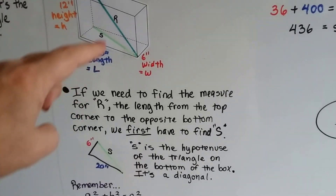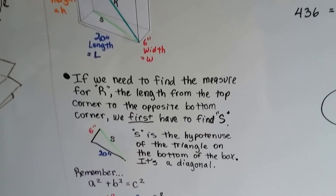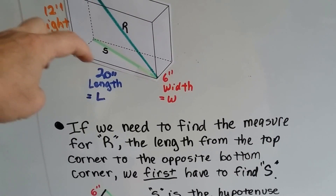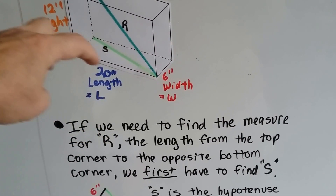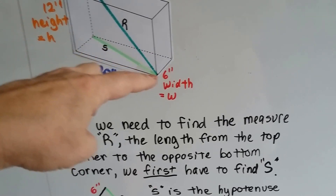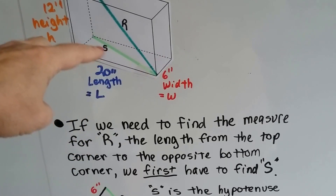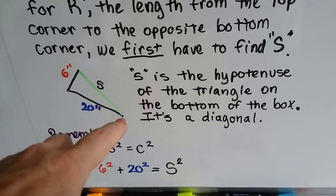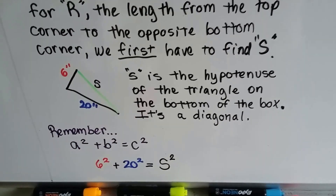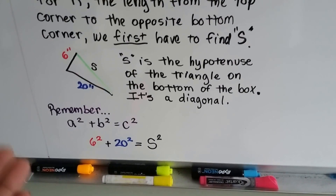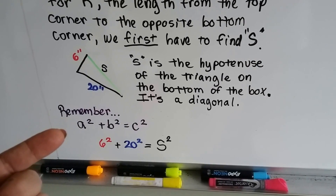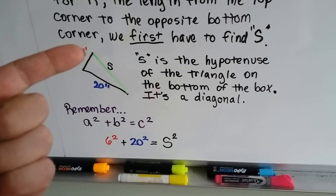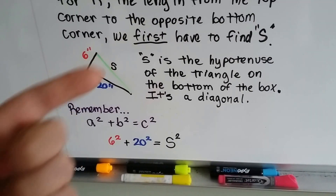The first thing we have to do is find S in order to find R. Here's our triangle for S — it's laying along the bottom with the 6-inch width and the 20-inch leg, and we're going to find the hypotenuse. So it's 6 inches wide, 20 inches long, and then there's S, the hypotenuse. Remembering the Pythagorean theorem, A squared plus B squared equals C squared, we can find that hypotenuse. It would be 6 squared plus 20 squared equals S squared.